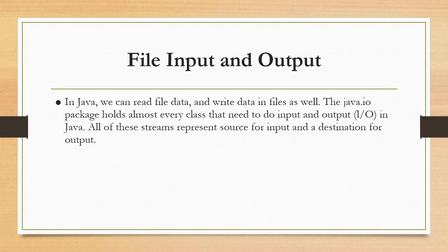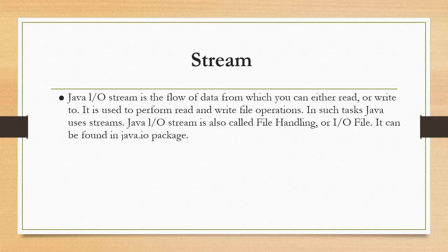File input and output — in a high-level programming language like Java, we can read file data and also write data in a file. In Java, the package java.io holds every class that needs to support input and output. All of these streams represent a source for input and a destination for output. Java IO stream describes the flow from which you can either read or write to a file. The Java input-output stream is also called file handling, or IO file, and this file operation can all be found in the java.io package.